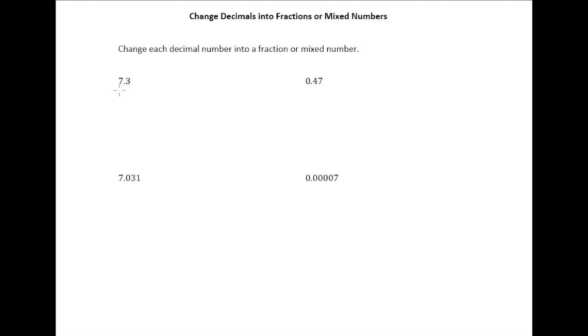We understand that anything to the left of our decimal point is representing the whole part of a number. So this first example is definitely going to be a mixed number. So let's just go ahead and write 7. And now the real key to taking a decimal number and turning it into a mixed number or fraction is to make sure you say it correctly.